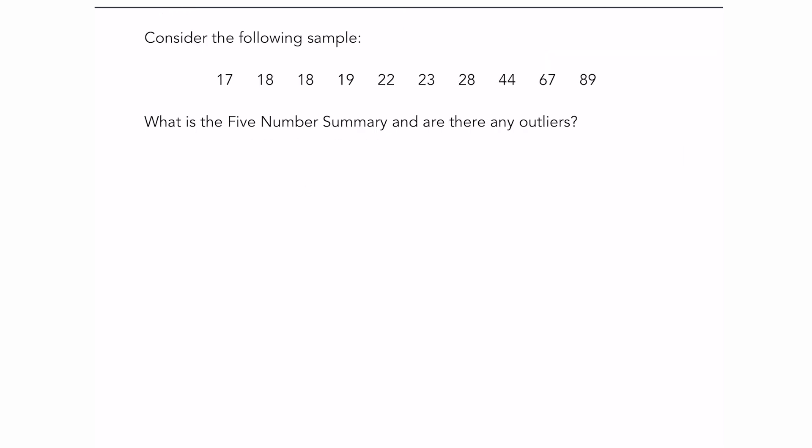Next we're asked to use the same sample to find the five number summary and to determine if there are any outliers. Okay, so there's a few steps here. First of all, the five number summary is the minimum, the maximum, and the three quartiles. So right off the bat we know the minimum is 17 and the maximum is 89.